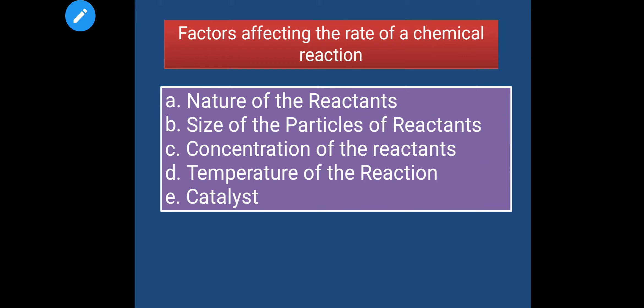Let's see the factors that affect the rate of a chemical reaction. First, the nature of the reactants. Second, the size of the particles of reactants. Third, the concentration of the reactants. Fourth, the temperature of the reaction. Fifth, a catalyst. We will see each one by one.